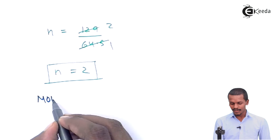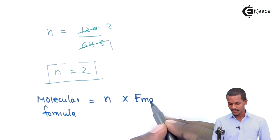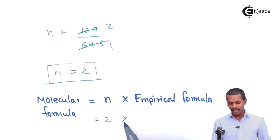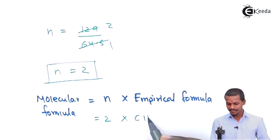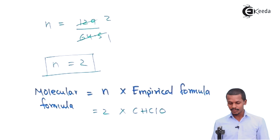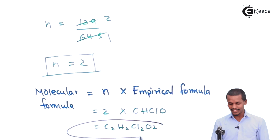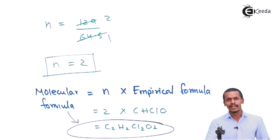Using the formula: molecular formula = n × empirical formula, and n = 2 with empirical formula CHClO, we multiply each element by 2. Therefore the molecular formula is C₂H₂Cl₂O₂. This is the molecular formula of the organic compound, determined through quantitative analysis of elements and atomic ratio calculations.